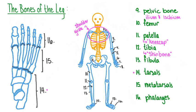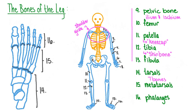The tarsals in the foot are similar to the carpals in the wrist. The tarsals are seven irregularly shaped bones that make up the ankle, the heel, and the proximal part of the foot. Extending from the tarsals, we find the metatarsals — five long bones that make up the main part of the arch of each foot. At the end of the metatarsals are the phalanges. Just like your fingers, four of your toes possess three phalanges each, while the big toe only possesses two.